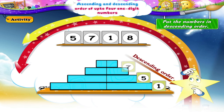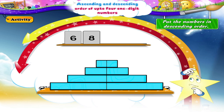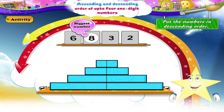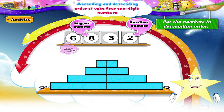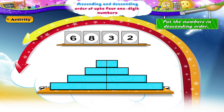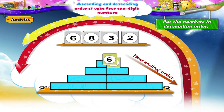Starry, what about six, eight, three, two? Yes, the biggest number is eight. And the smallest number is two. Between six and three, six is the bigger number. The numbers arranged in descending order are eight, six, three, two.